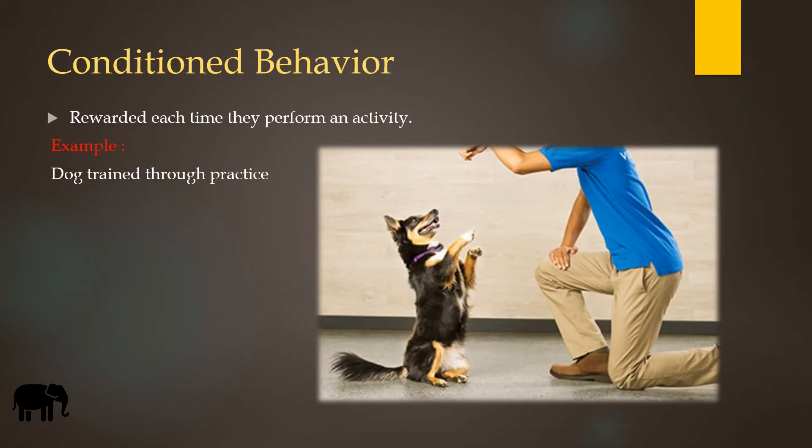Conditioned behavior: animals are rewarded each time they perform an activity. For example, dogs are trained through practice. The dogs are rewarded with a treat once they achieve their targets.